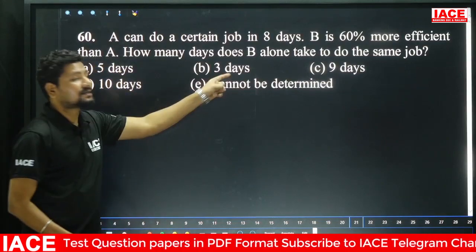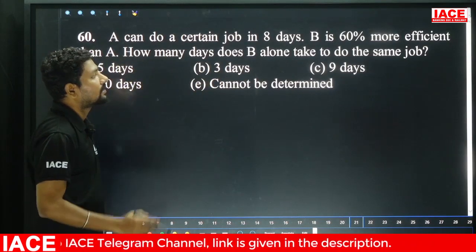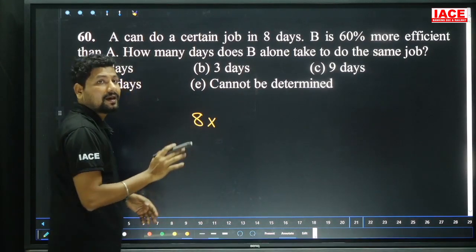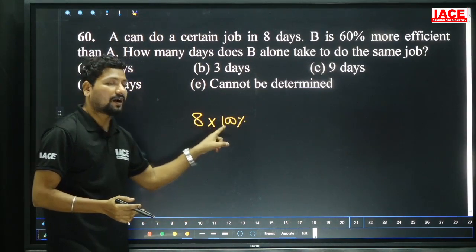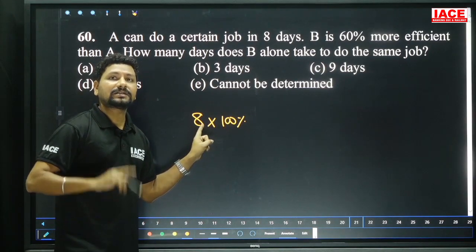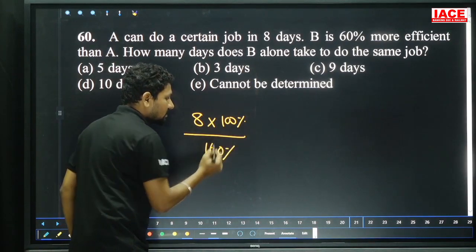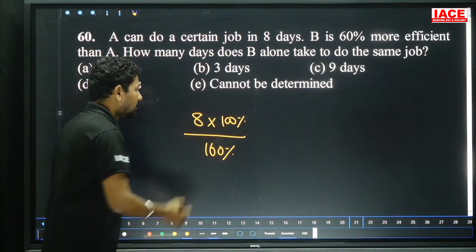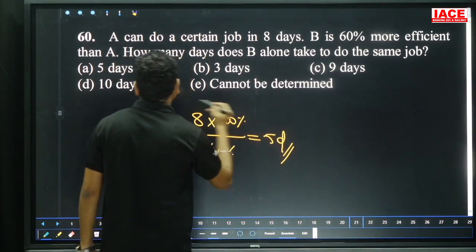A can do a certain job in 8 days. B is 60% more efficient than A. How many days does B alone take? A's efficiency = 100 units per day. Total work = 8 × 100 = 800 units. B is 160% efficient, so B does 160 units per day. Days for B = 800/160 = 5 days. Option A.